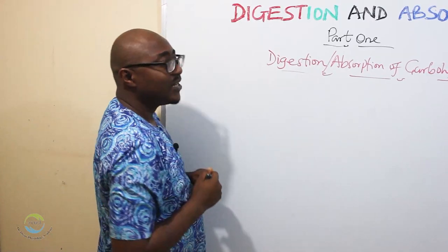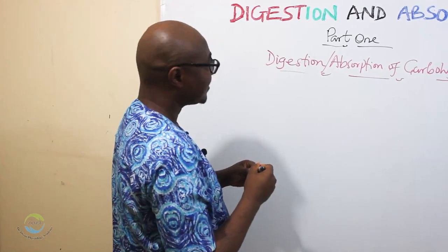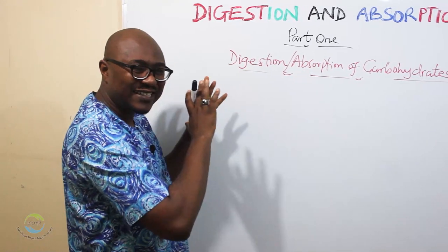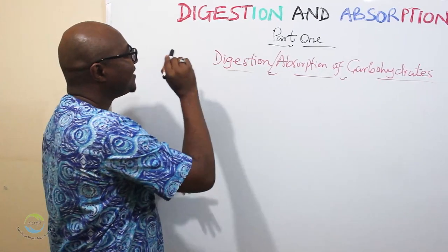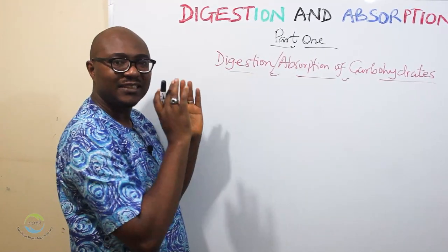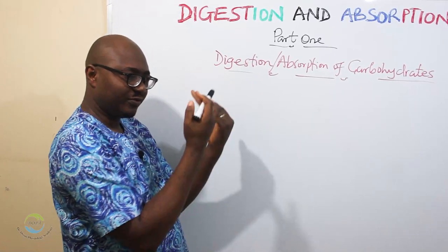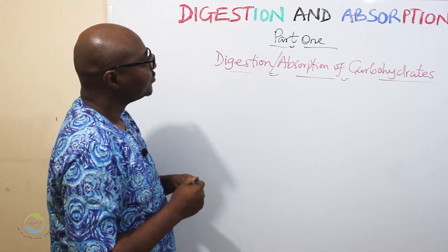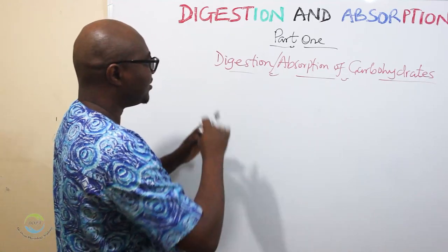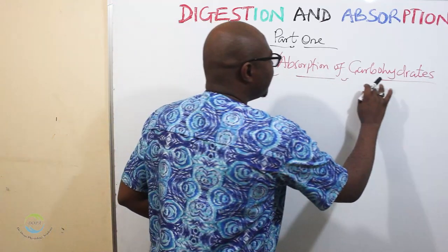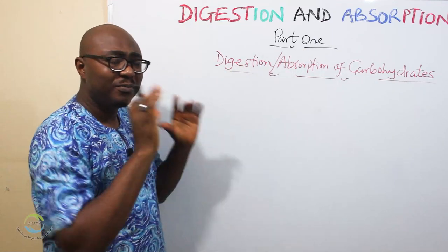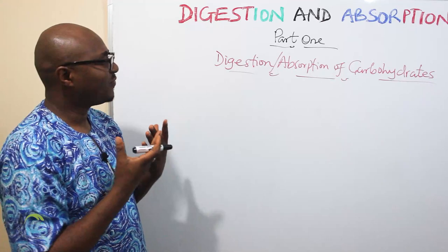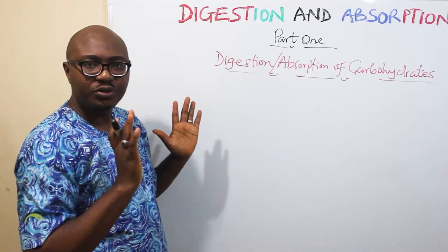Today we are going to be dealing with almost the last part of gastrointestinal physiology — digestion and absorption of the nutrients that you're taking. This is part one. We're going to start with carbohydrates. But before we go ahead, let's understand the basic principle of digestion and absorption.